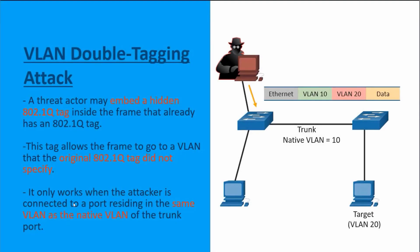With a VLAN double tagging attack, a threat actor is going to embed a hidden 802.1Q VLAN tag inside of a frame that already has an 802.1Q VLAN tag. The attacker is going to double tag a frame. For example, our attacker is going to build a message that's going to communicate from its current VLAN, which is VLAN 10, with a targeted VLAN of VLAN 20.